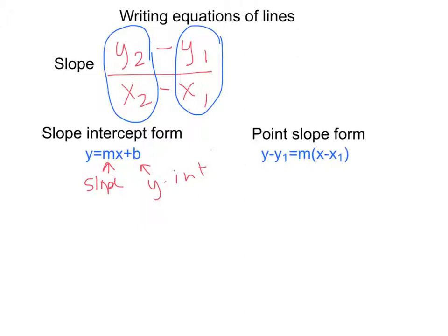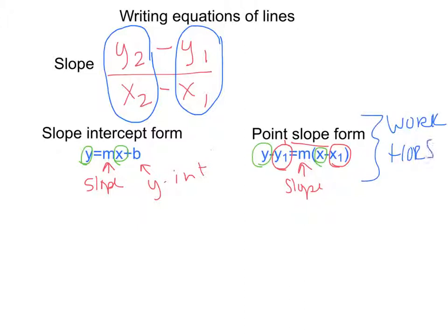The next form we're going to talk about is point-slope form. The m is still your slope, but the difference here is I have y1 and x1, which make up my point. So I have a slope and a point. The plain x and plain y without any subscripts are just part of my formula — you don't substitute anything in for those. Point-slope form is really just a workhorse; you don't leave your final answer in it. You use it to get to slope-intercept form or standard form.